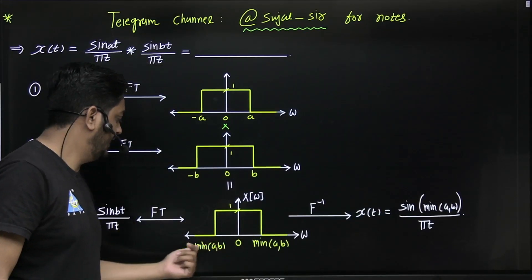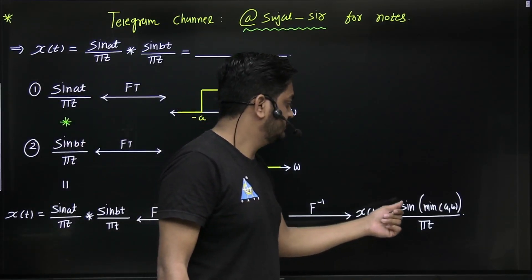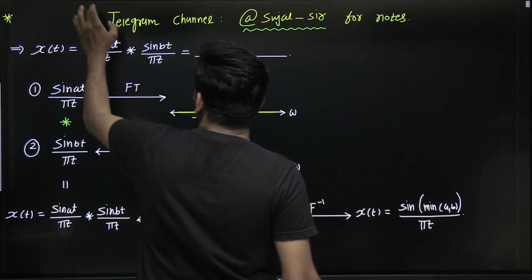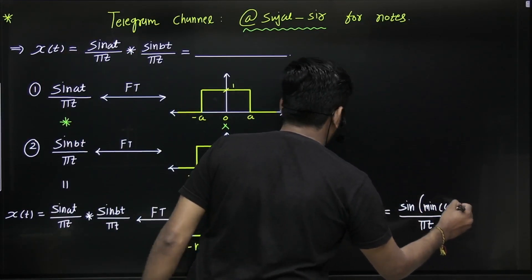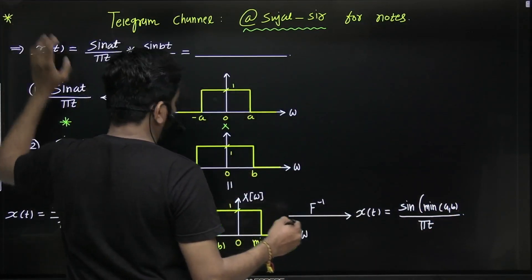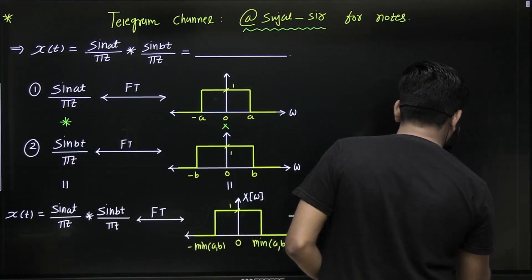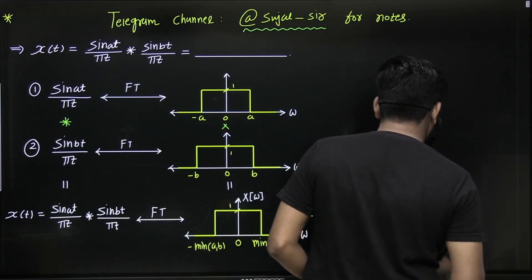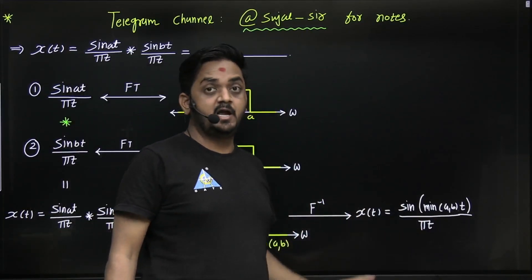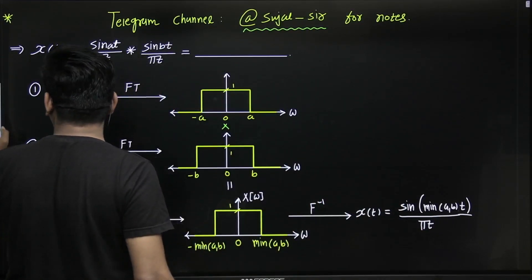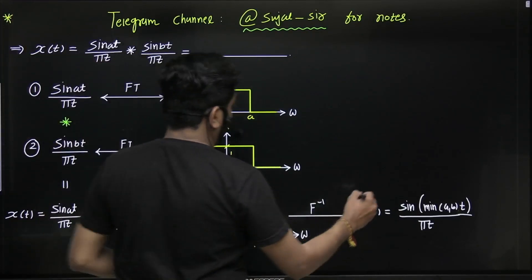The inverse Fourier transform of this rectangle function — which goes from minus min(a, b) to plus min(a, b) with amplitude 1 — is sin(min(a, b) · t) divided by πt.